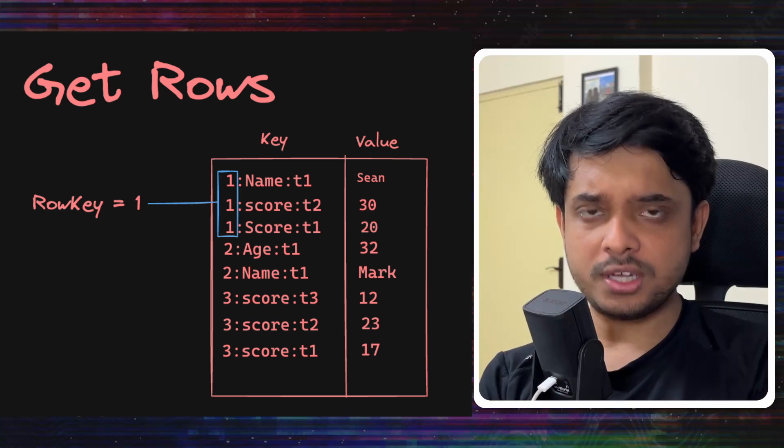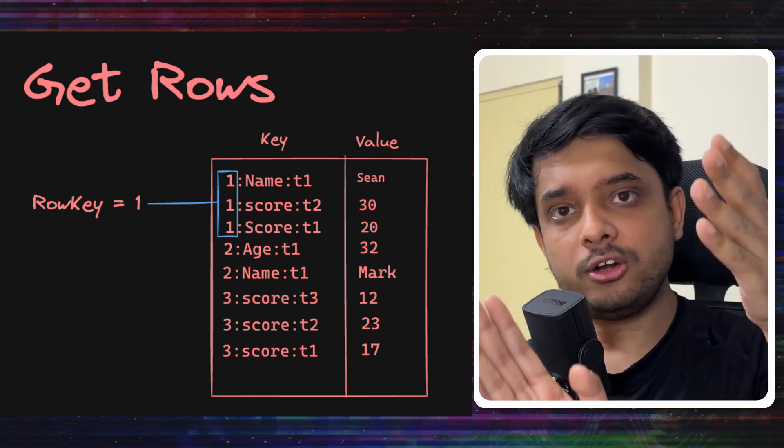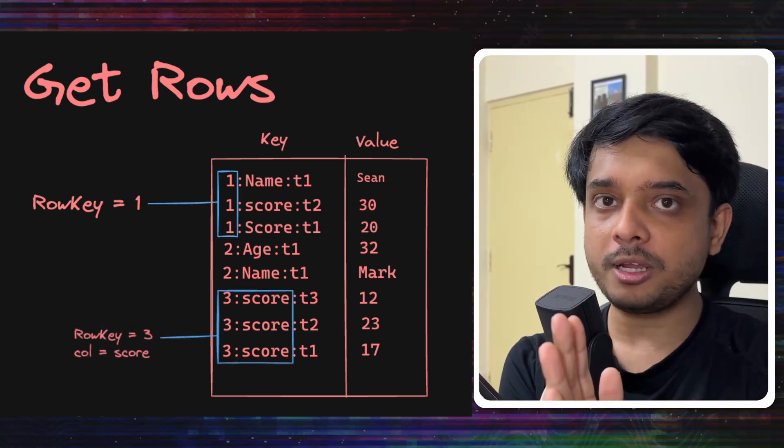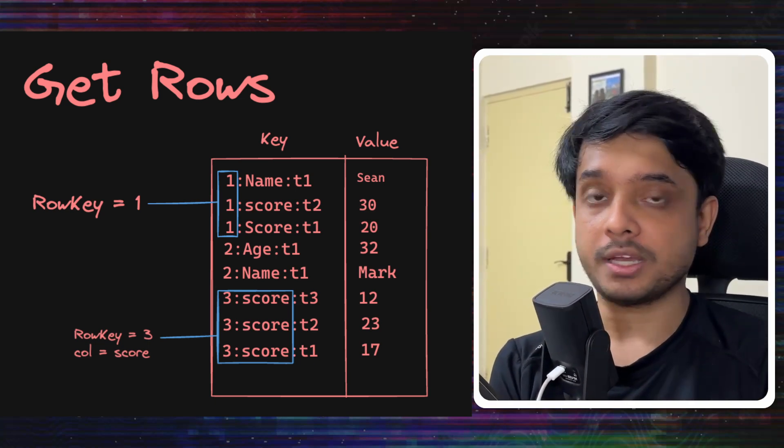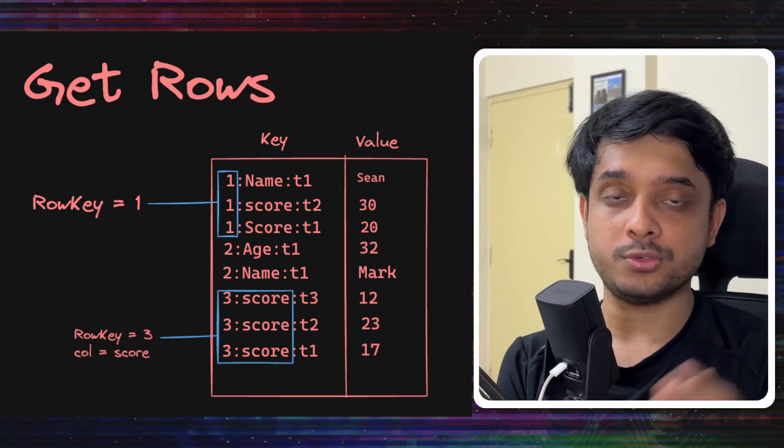If more information is given to us, let's say like the column name, we can do a prefix search with the row ID plus the column name and then it will give us data from that column only. And it can do it very efficiently as I said using prefix search.